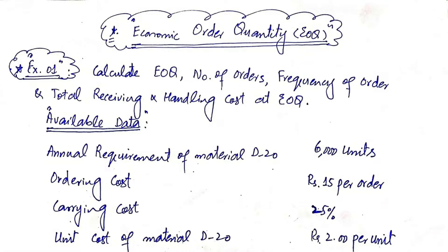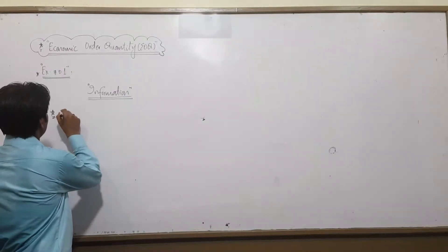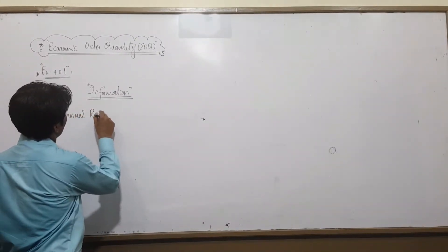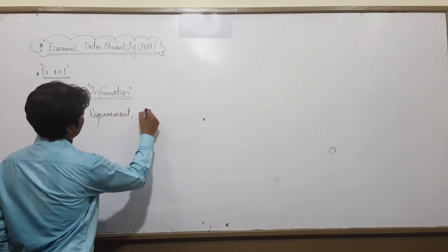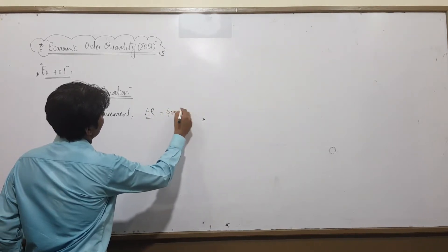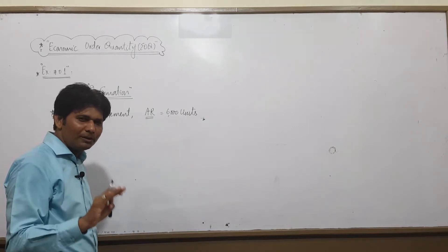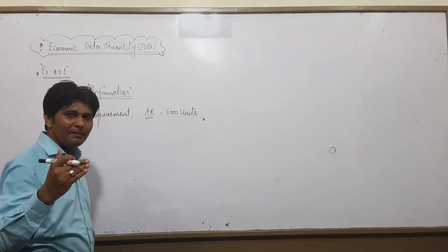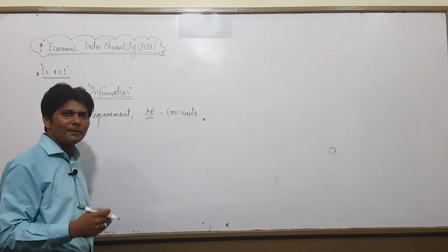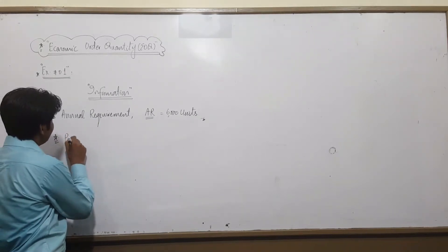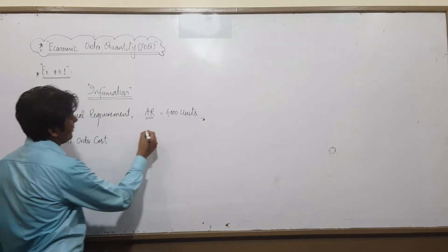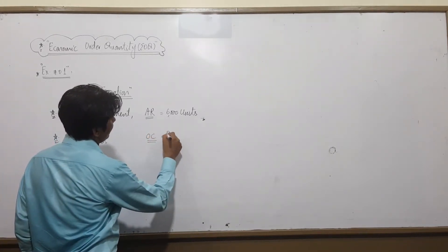After reading the question, we write the information in a proper sequence so it helps us as we solve each requirement. The EOQ formula is 2 × AR × OC ÷ CC (under square root), so we have three variables: annual requirement, per order cost, and per unit carrying cost. We write in this order. First: Annual Requirement (AR) = 6000 units. Then: Per Order Cost (OC) = ₹15 per order.